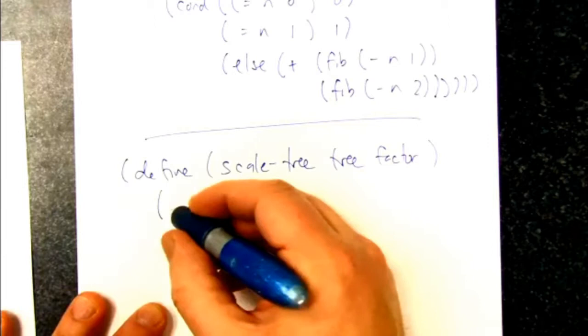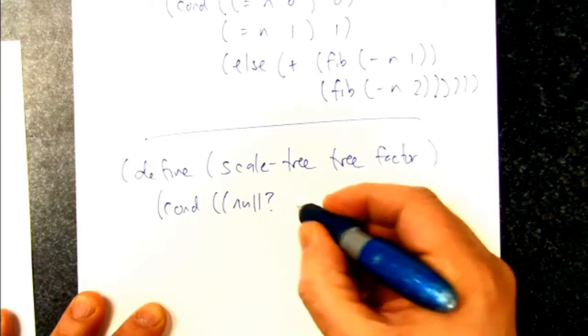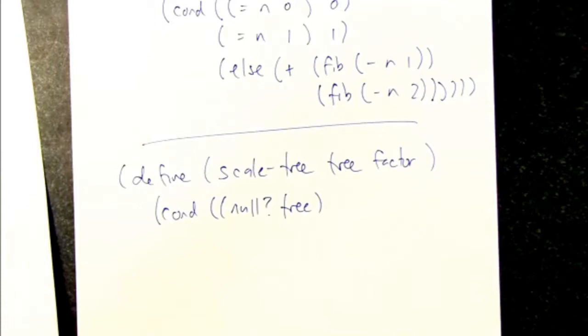So it's going to look kind of the same. First, we're going to say, is the tree null? What's the base case for constructing another tree? Yes, in this case it's null.